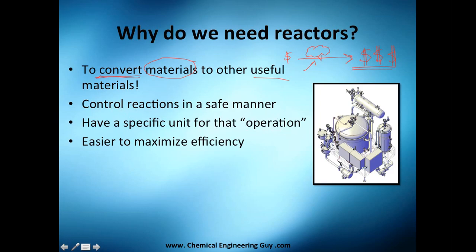We also want a specific unit dedicated to that operation, so we know exactly where the chemical reaction is taking place. If something goes wrong in a plant — say you're not getting the yield you want — you go directly to the reactor to study it, rather than checking every pipe and unit. That's why we concentrate the reaction in one specific reactor.